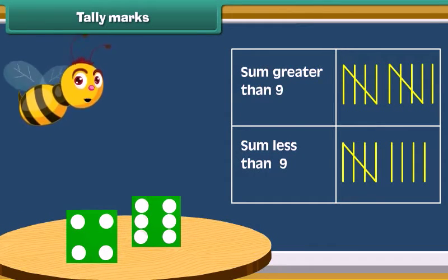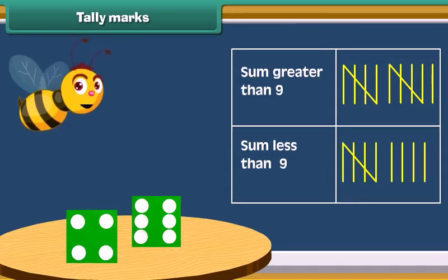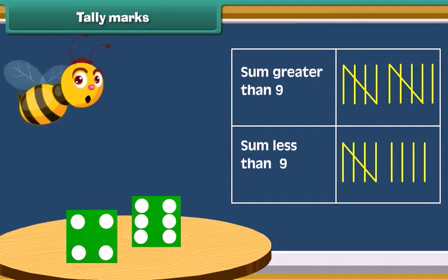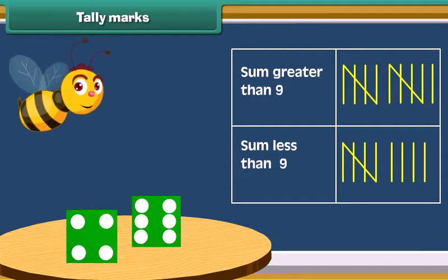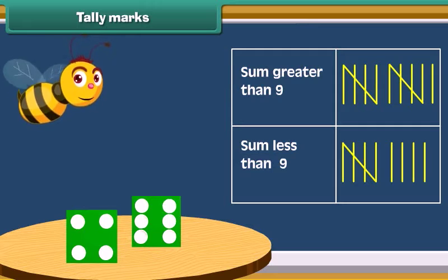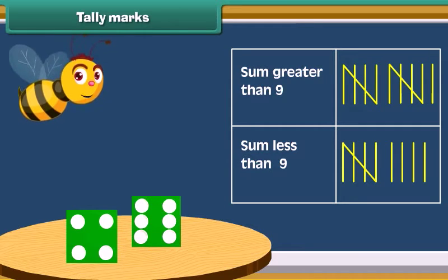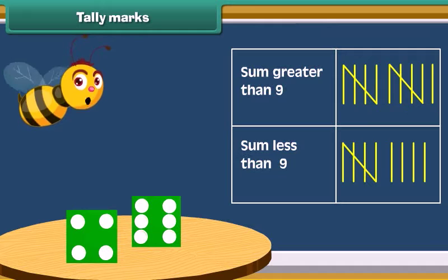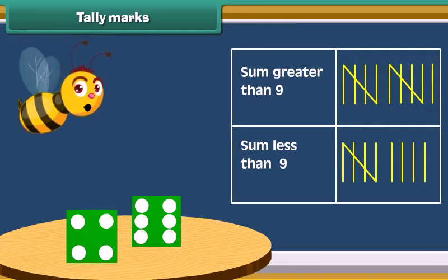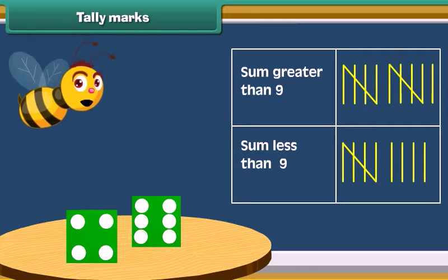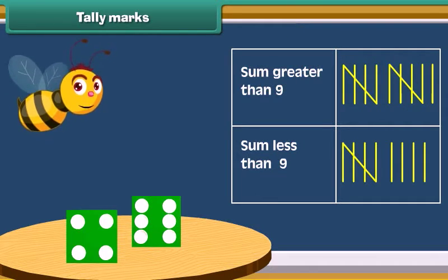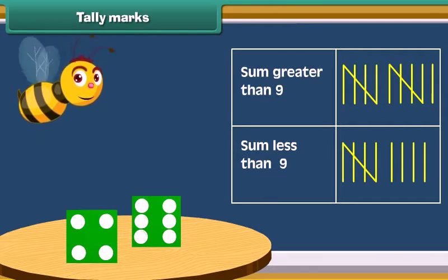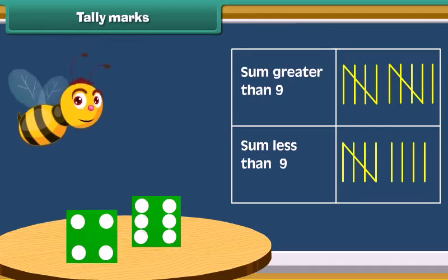We see that markings help us to record data. These are called tally marks. Instead of counting each mark one by one, skip the count by fives and add the remaining marks to the count. This makes counting quick.